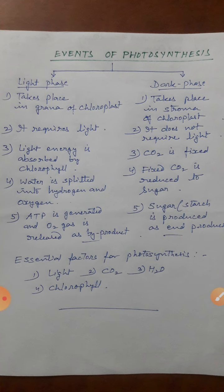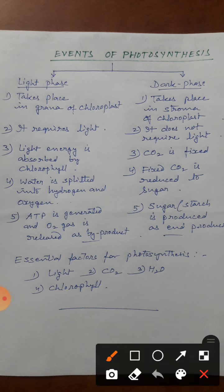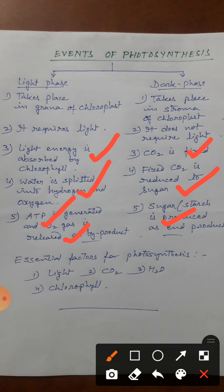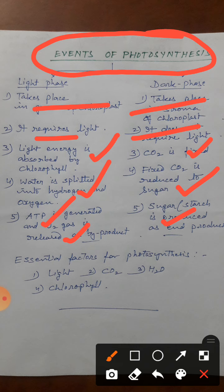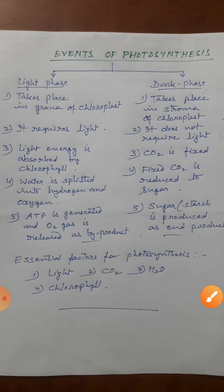To ultimately, agar question aata hai — what are the events of photosynthesis or mechanism of photosynthesis — to usmein ye saare points hum likhenge: light energy ka absorb hona, water ka split hona, ATP ka banana, oxygen ka release hona, carbon dioxide ka fix hona, aur carbon dioxide ka sugar mein reduce hona. Ye jab hum serial mein likhte hain, to ye ho jata hai overall events of photosynthesis. Is photosynthesis mein ultimately kya kya ghaTnaen ghaTti hain, kahan ghaTti hain — mechanism of photosynthesis as a whole. Agar broad question aata hai, to is poore ko utaar denge — light phase likhne ke baad dark phase ko continue karke likhenge, aur tabular form mein karenge.